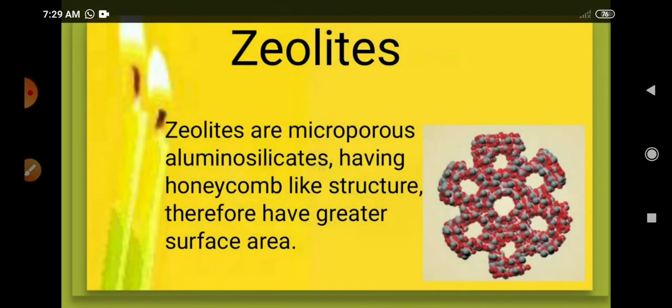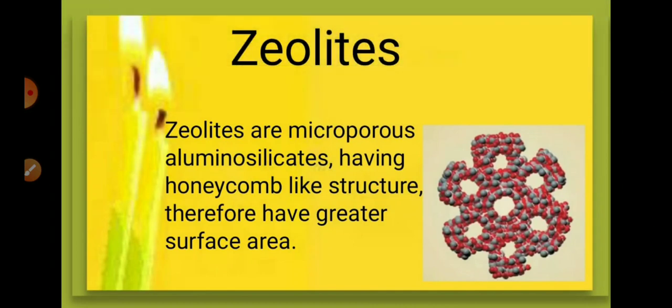Zeolites are microporous aluminosilicates having many pores on their surface, just like a honeycomb structure. Because of this, they have greater surface area. In the figure you can see the porous structure here. It's like a sponge which has many pores on it.